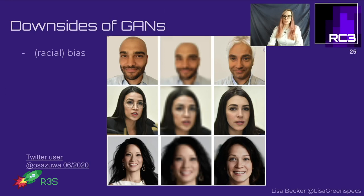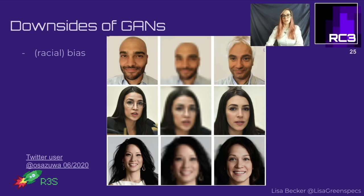Twitter user Osasu has used this algorithm more times - you can see the original images on the left, the pixelated versions in the middle, and the algorithm's output on the right. A variety of ethnic backgrounds and skin colors had their pixelated versions up-sampled into very whitened versions of themselves.